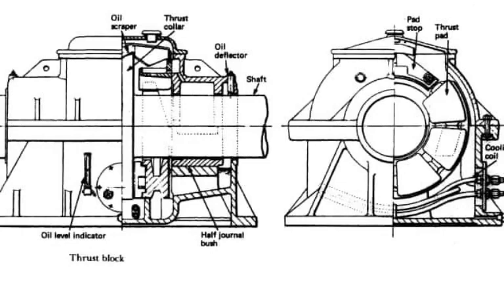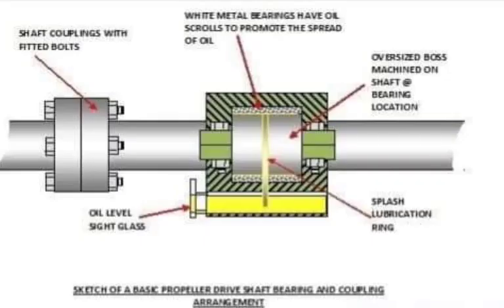At the aft portion of the ship there is a propeller, and then a propeller shaft which comes inside the ship through the stern tube bearing. There is an intermediate shaft that connects the propeller shaft and the crankshaft. To support the intermediate shaft there is an intermediate shaft bearing. At the aft portion of the main engine we can see the thrust bearing, which is an integral part of the main engine.